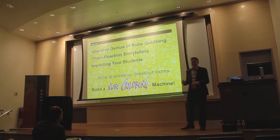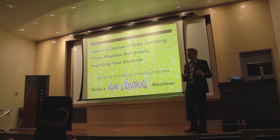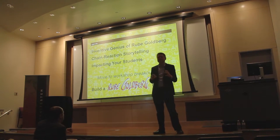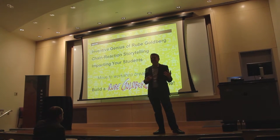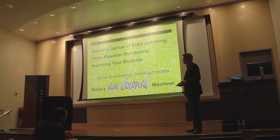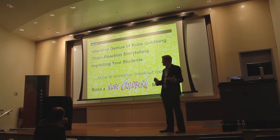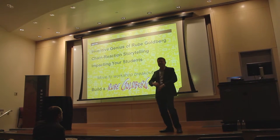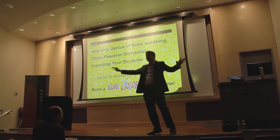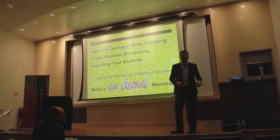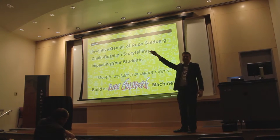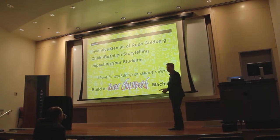We'll start off by talking about Rube Goldberg and some of his cartoons and the role that he's had in pop culture. Then I want to tell you about how to use chain reactions to tell stories and how that storytelling can help connect across cultures and really make a difference with underrepresented students. Then we'll go through some ideas on how this might impact your students, do an activity where we build a human Rube Goldberg machine involving all of you, and then build physical machines with a specially curated kit in the lobby.